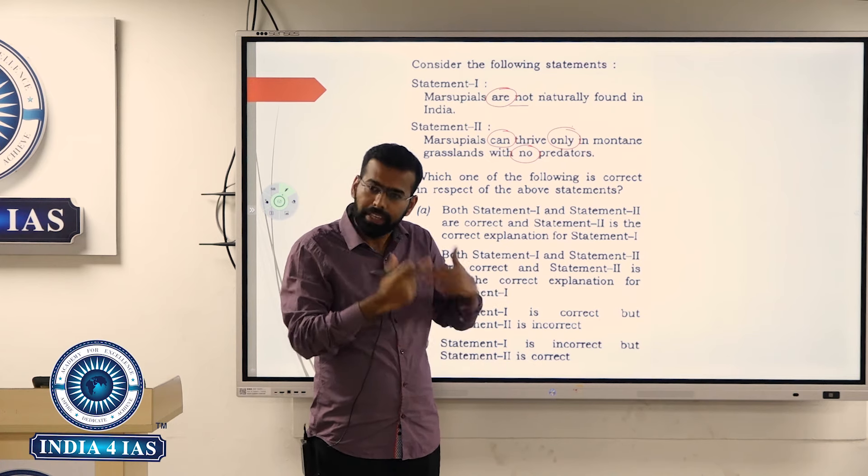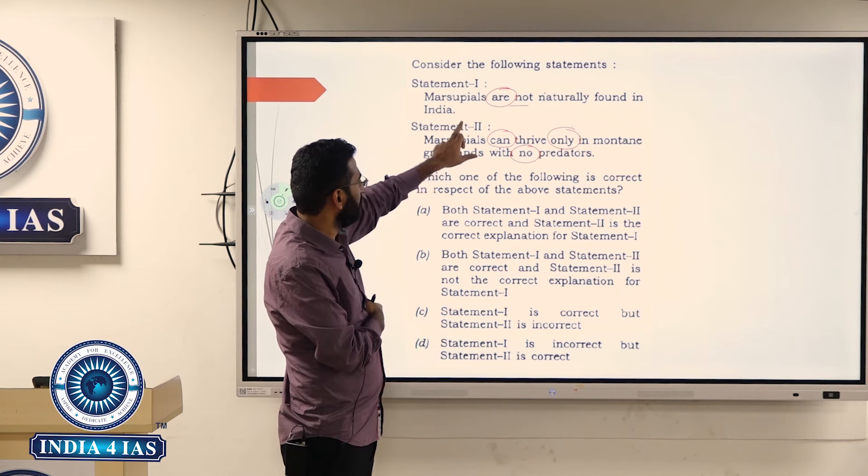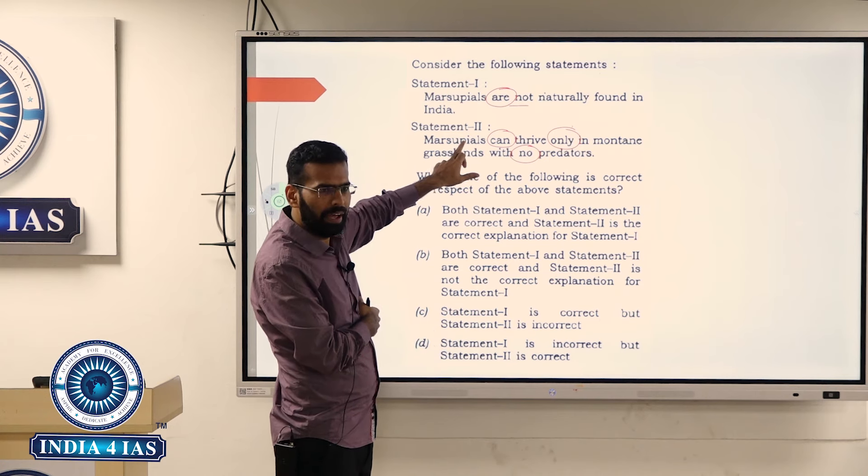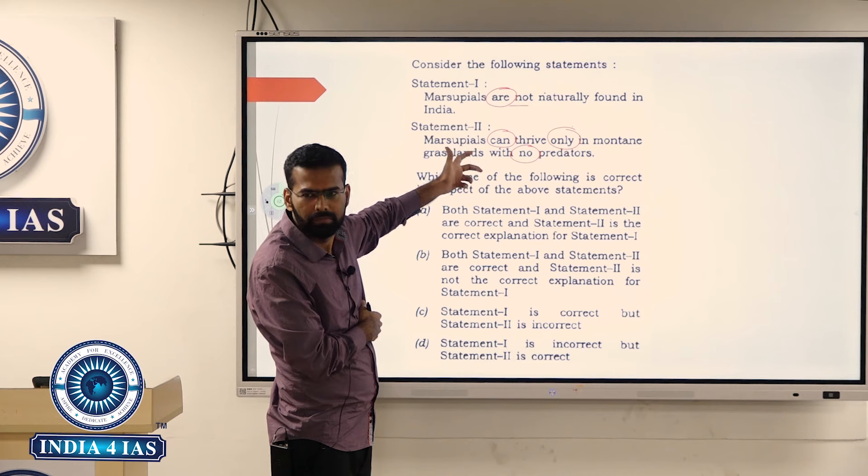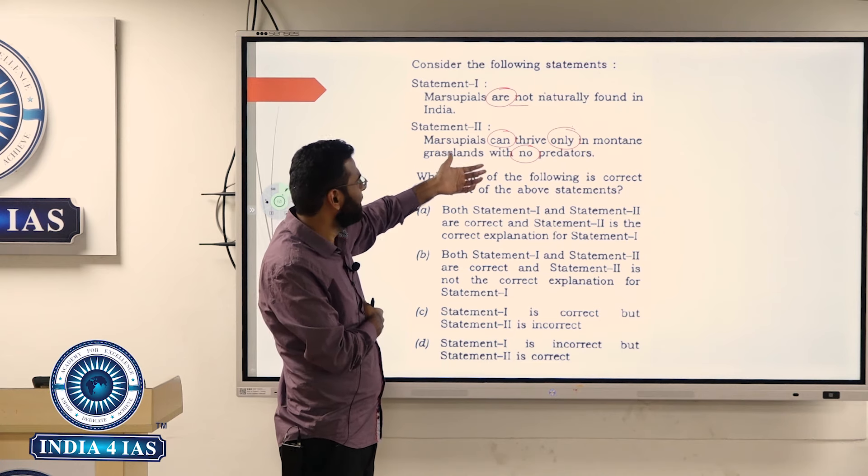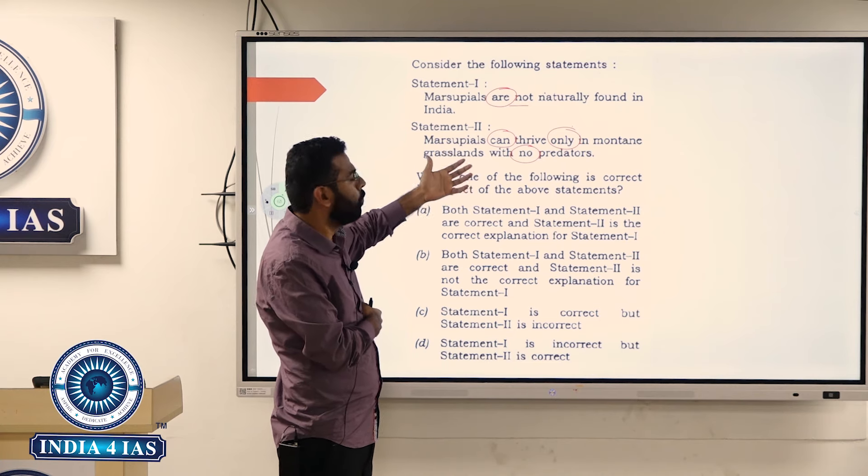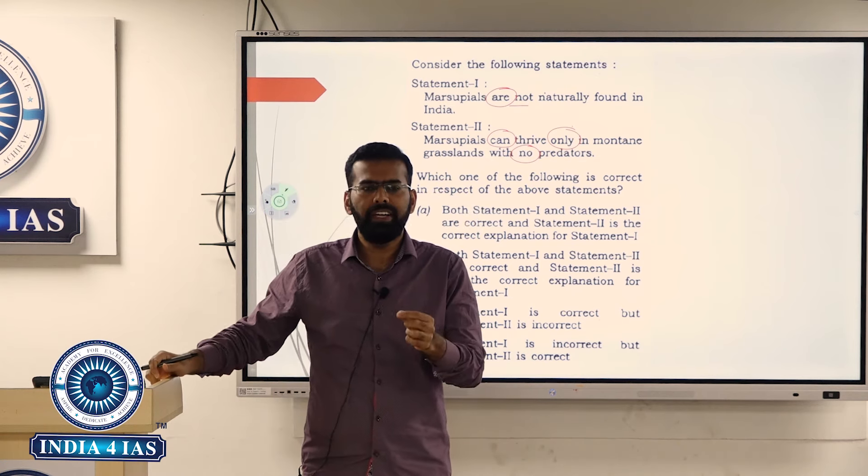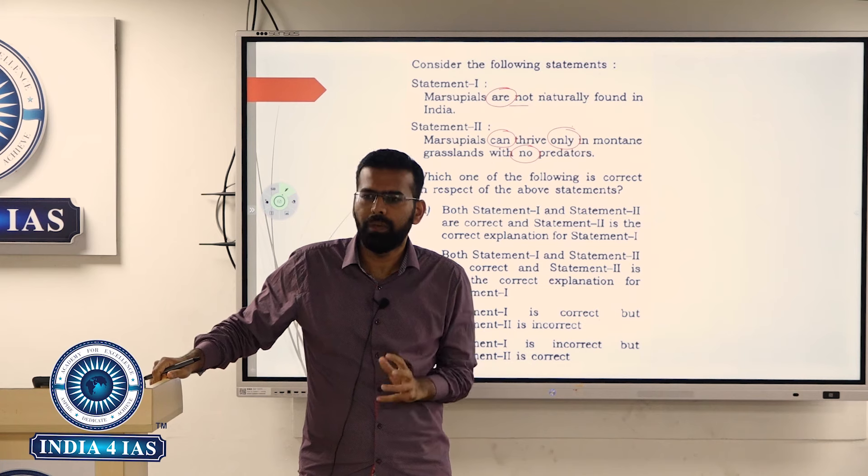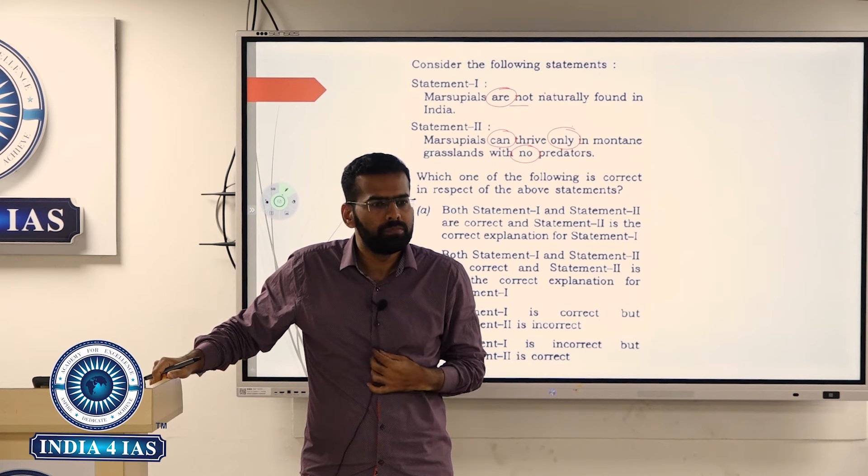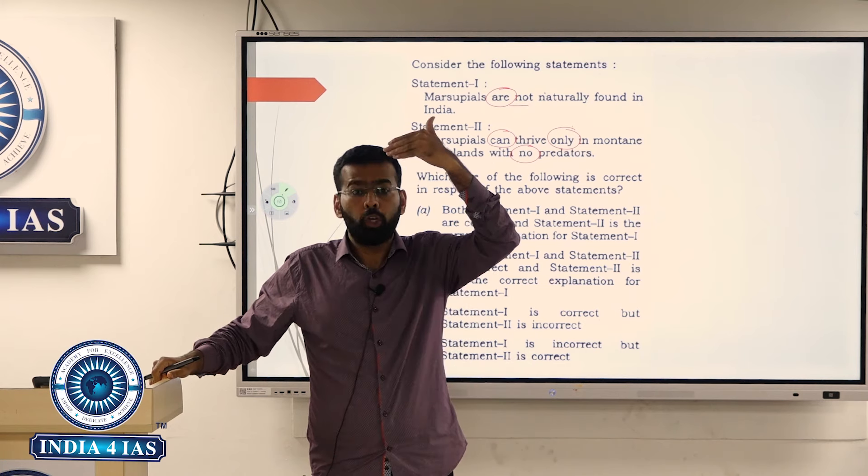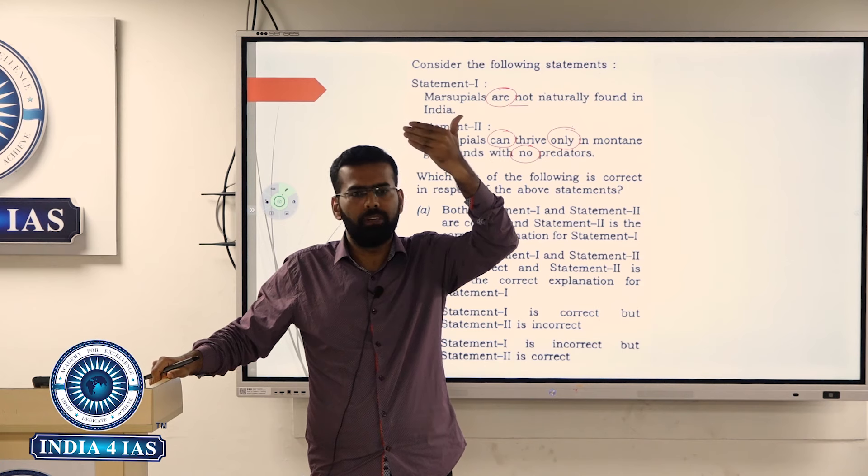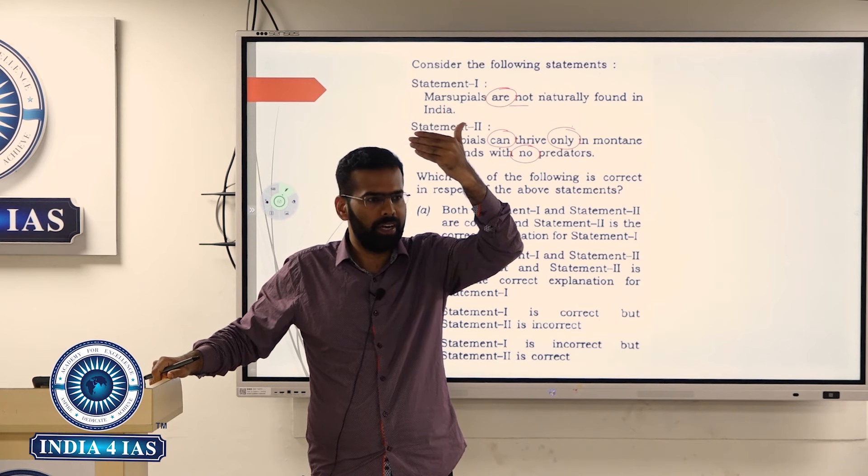Think logically. Can you say this is some animal that can thrive only in mountain grasslands with no predators? If it has no predators, that means it should be top of the food chain, correct?